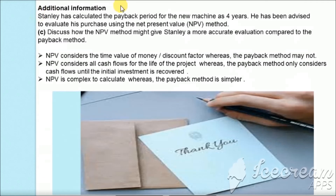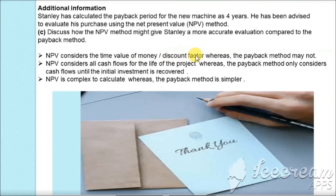Further additional information states that Stanley has calculated the payback period for the new machine as four years. He has been advised to evaluate his purchases using the net present value (NPV) method. The question asks us to discuss how NPV might give a more accurate evaluation than the payback method. In the NPV method, we consider the time value of money — the present value of future cash flows using discount factors — which is not done in the payback method. Hence NPV is a more accurate method of investment appraisal.